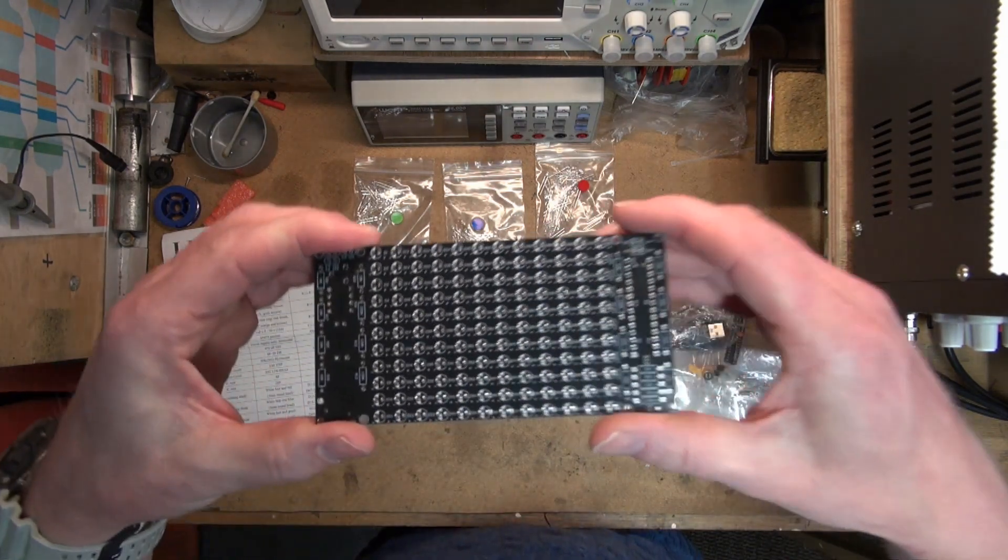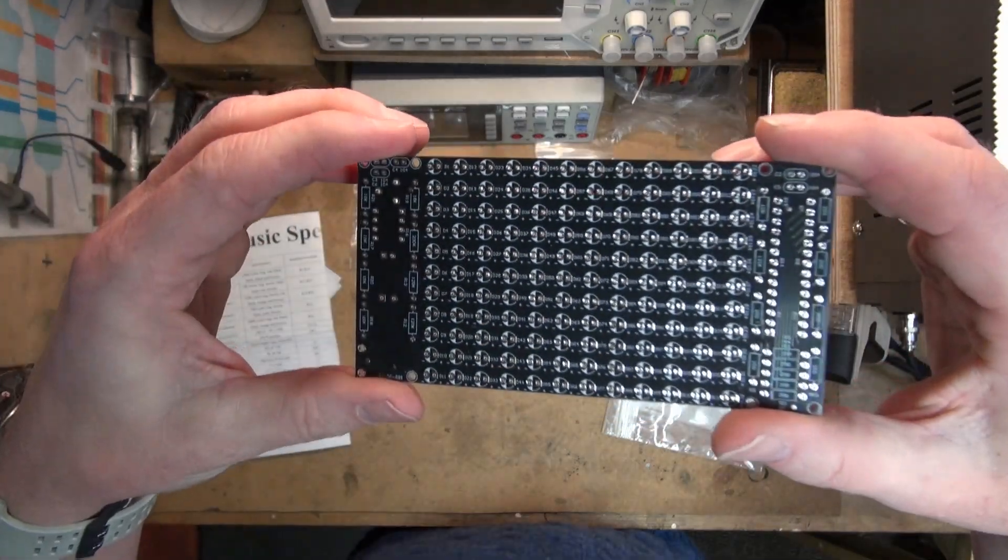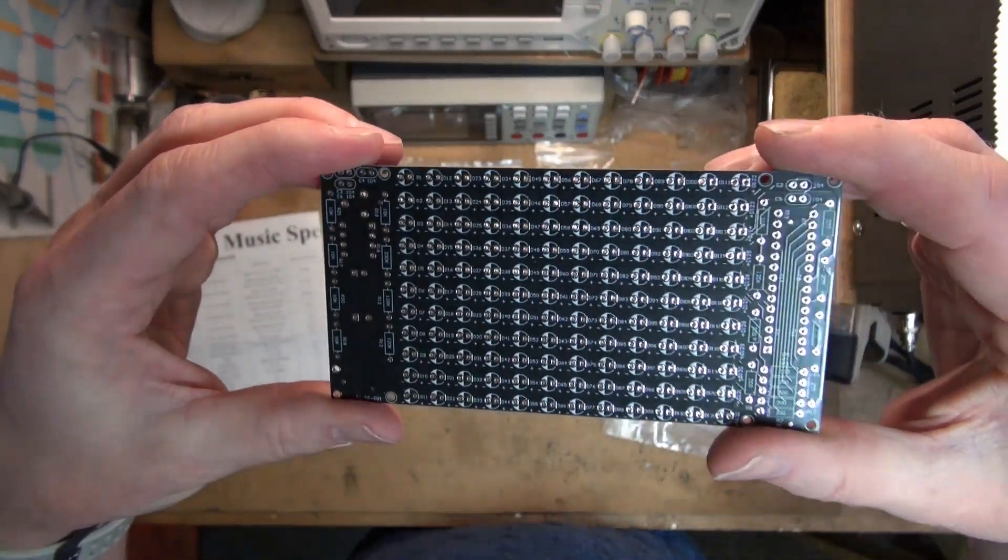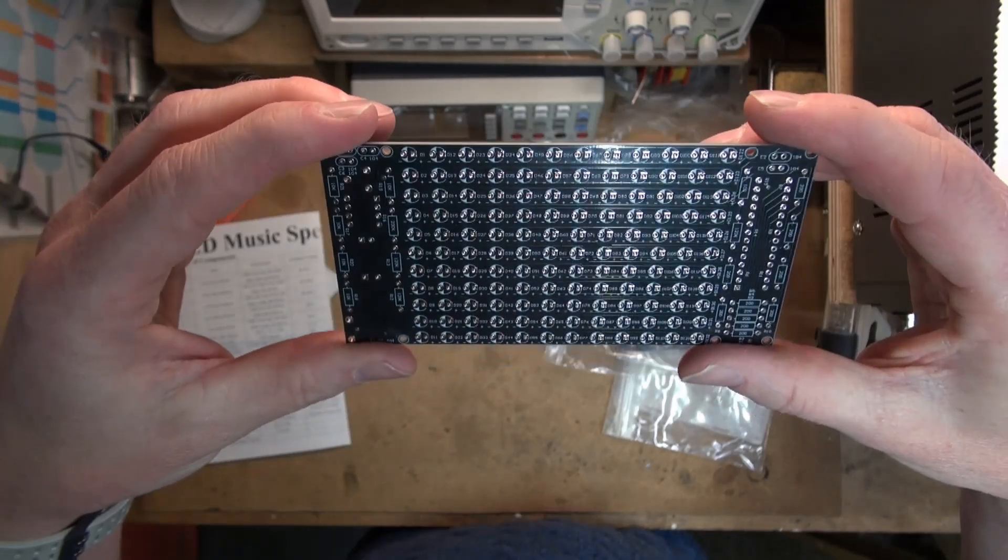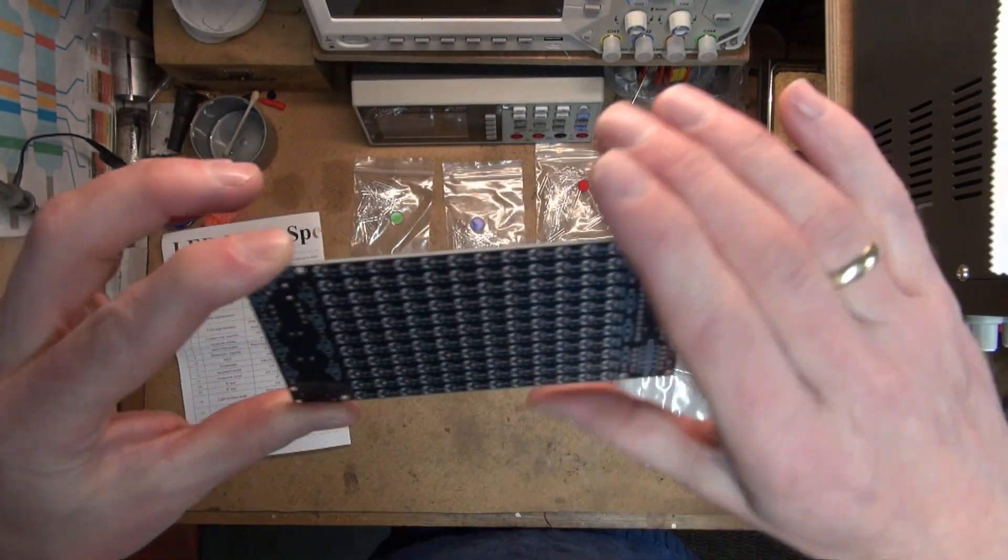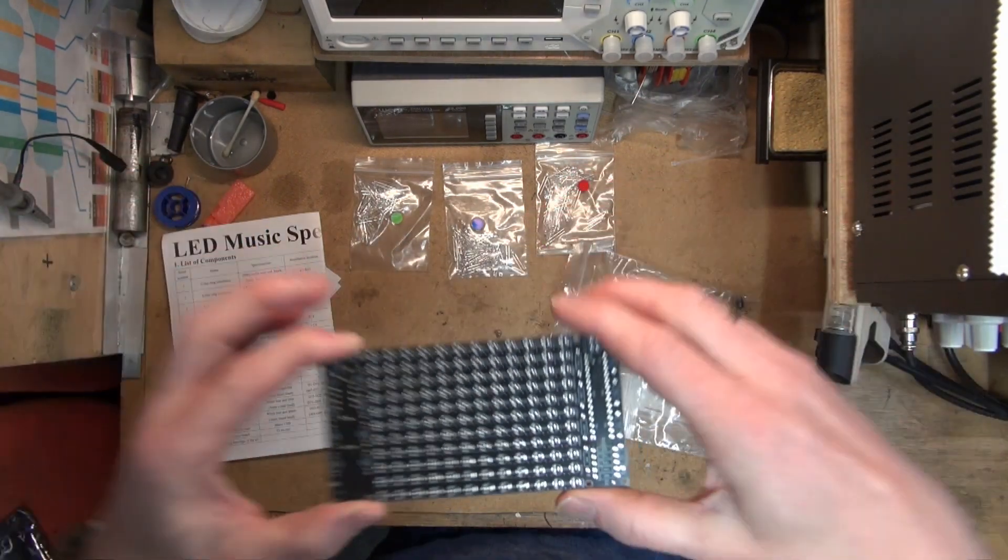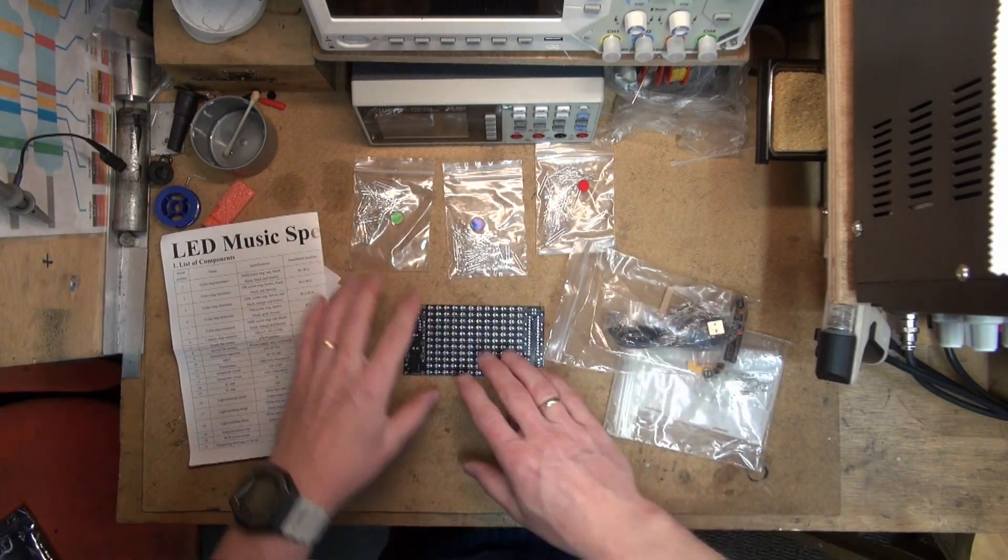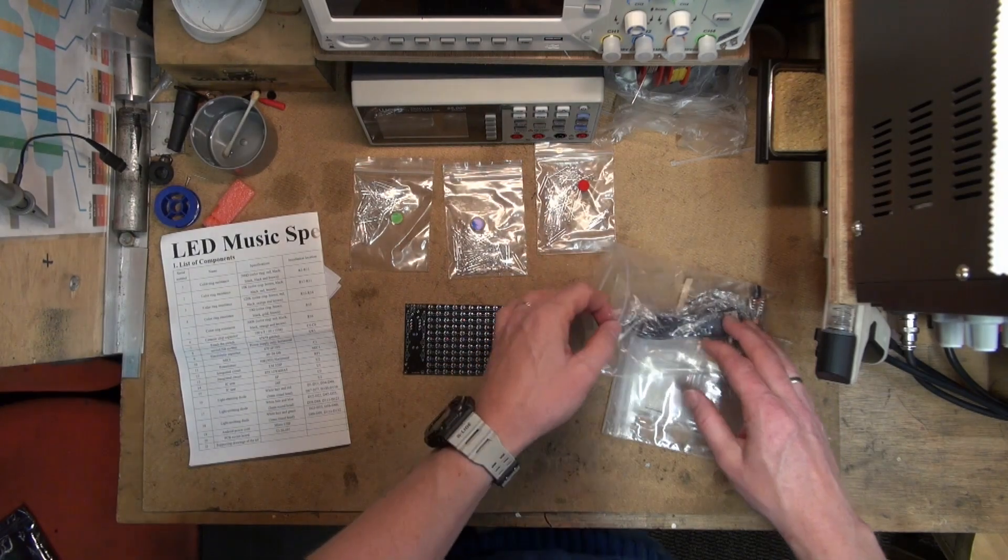Everything is silkscreened on there. It's probably tiny, and if I can get rid of the glare I can probably see that there are a lot of markers. Each and every component is marked and also the value of the resistors and the capacitors is on there. So that's good. That's what I mean with good quality kits.